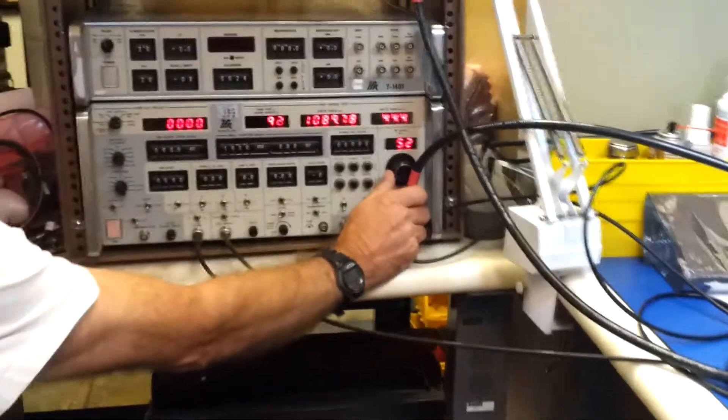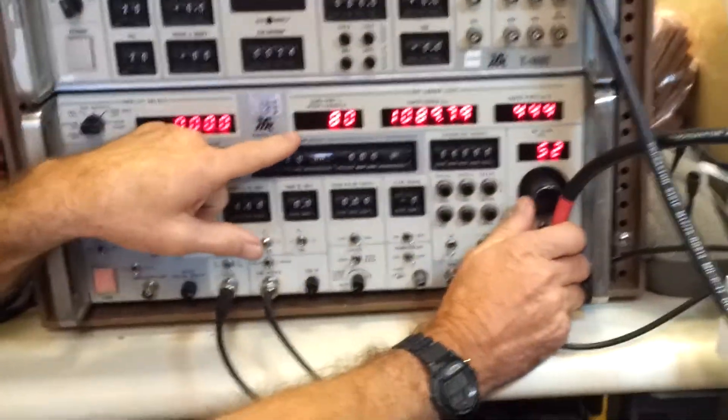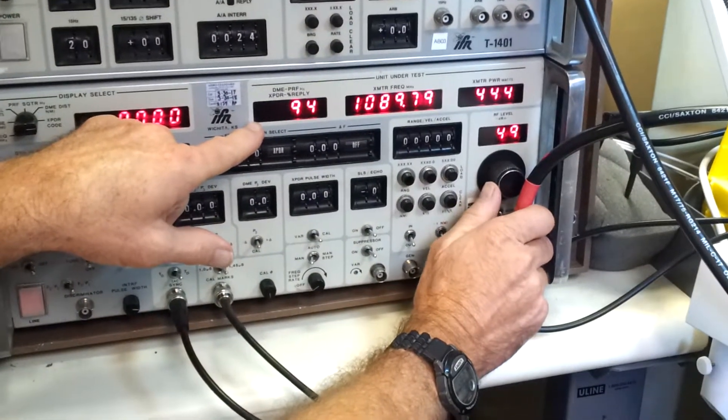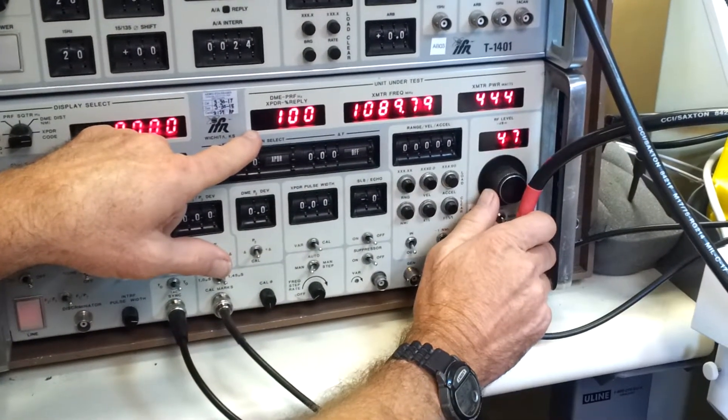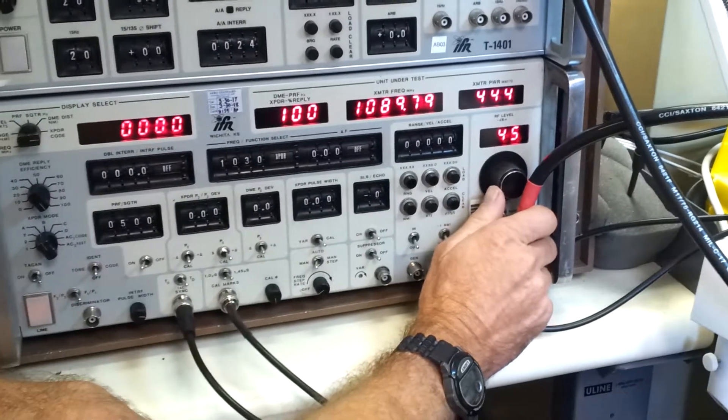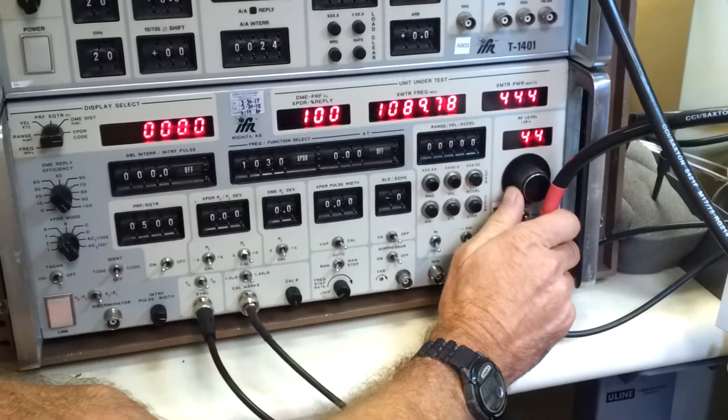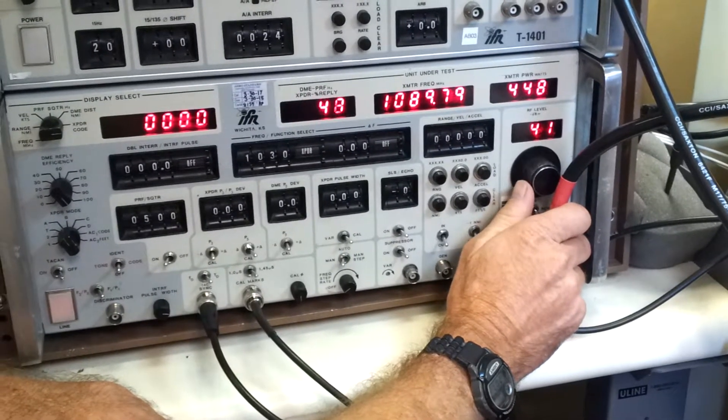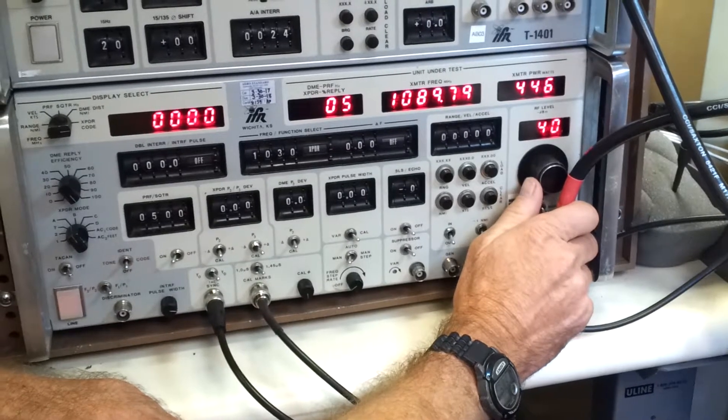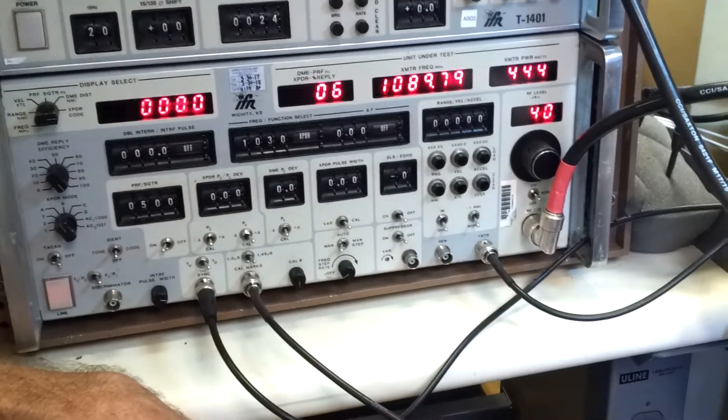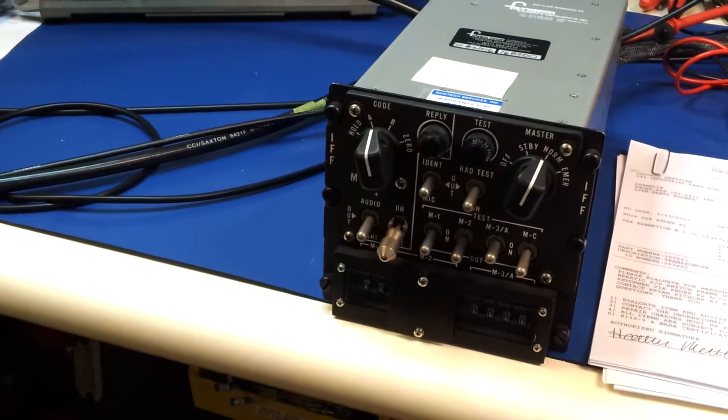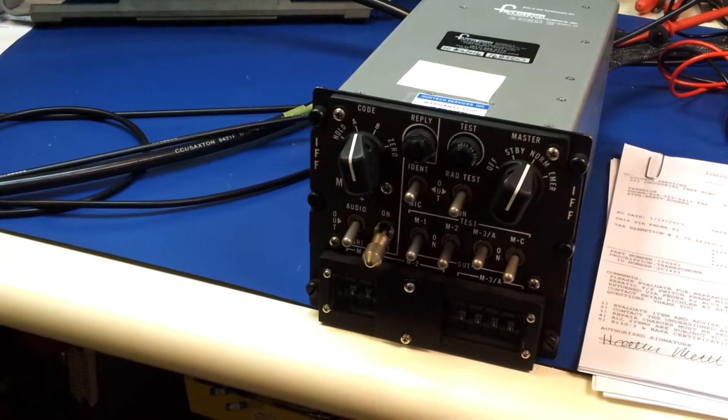Increase the RF level and reach a point where the fly has become intermittent and it will stabilize as we go through and reach another point. Right here, at this point, we start getting intermittent reply light on the transponder itself and adjust where it comes back on.